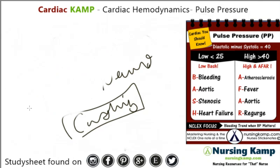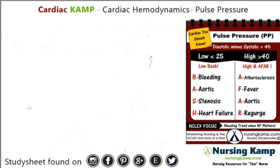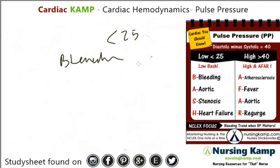So let's go to low. A low pulse pressure is less than 25 — that's really acute — and the causes are bleeding or aortic stenosis.